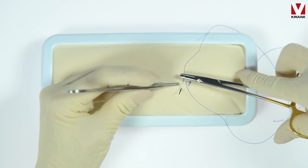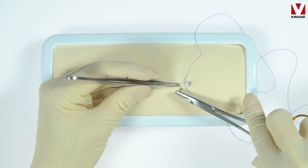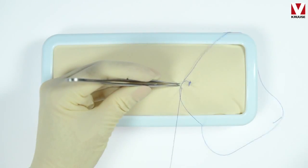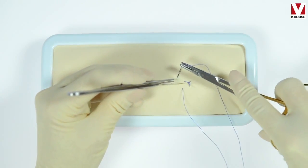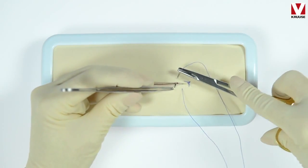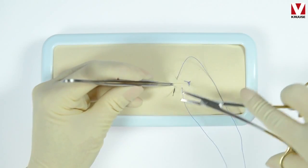So you go from one side to another. Try to make each bite equally in size, and make sure that you have the same distance between the stitches.